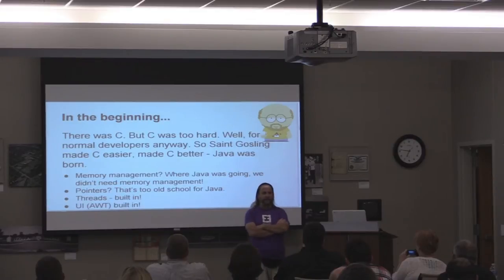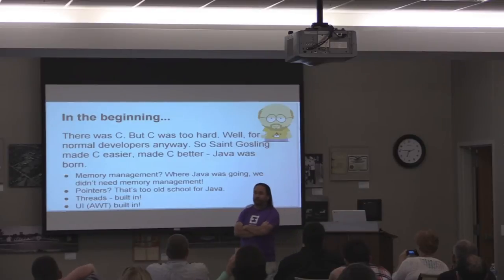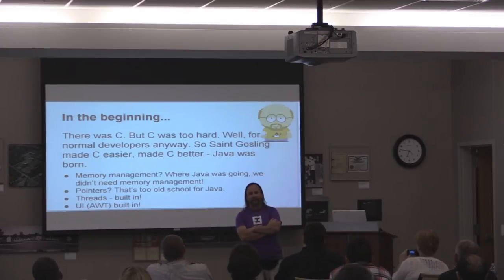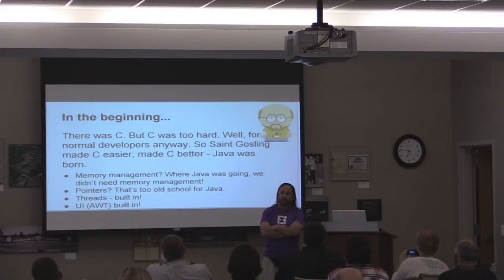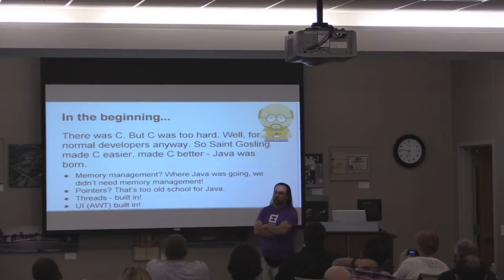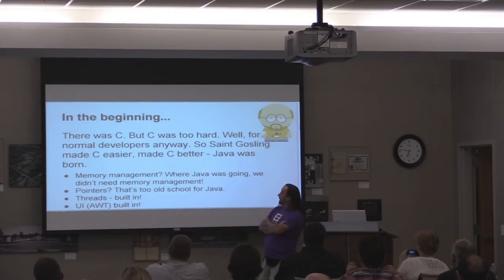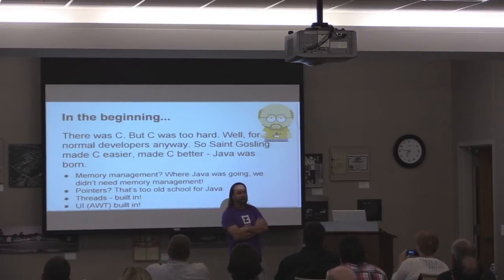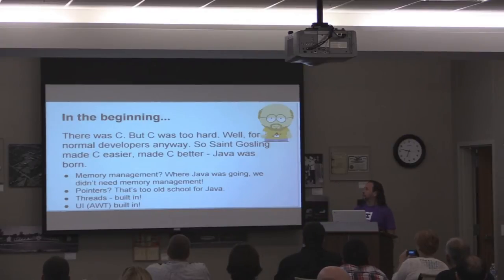Threads were built in — that was a novelty back when Java came out. A lot of languages, even C, had threading, but you had to get add-on packages and libraries, and it didn't work cross-platform. Languages before Java, as a rule, weren't cross-platform. And then, really shockingly, there was a user interface — albeit primitive in AWT — built right into the language. Languages before Java really didn't have that sort of facility. So Java was really pretty groundbreaking when it first came out.